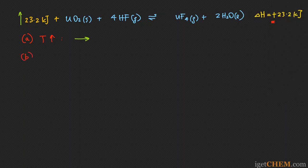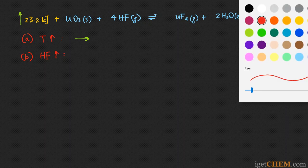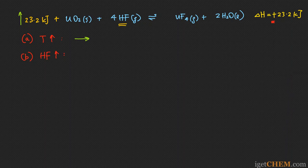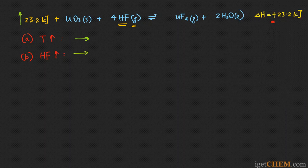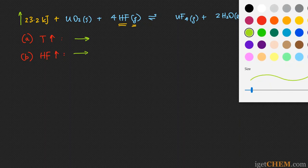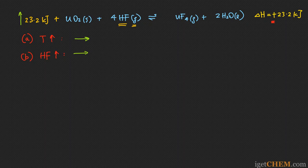Part B: if we increase the amount of HF by adding more HF to the system, you see that HF is on the reactant side and it is a gas. Adding more reactant is going to push the reaction to the right. Le Chatelier's principle tells us the reaction should shift to the right. It's important to recognize that HF is a gas, and that makes a difference as we'll see in the next part.